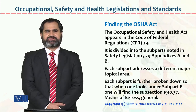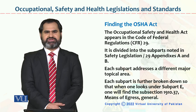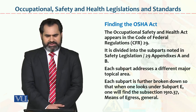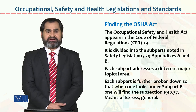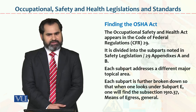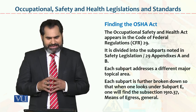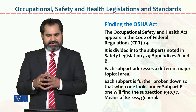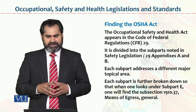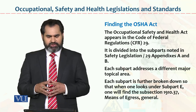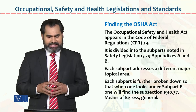Dear students, now we are discussing the findings of the Occupational Safety and Health Act. The Occupational Safety and Health Act appears in the Code of Federal Regulations, 29. It is divided into subparts noted in safety legislation, 29 appendixes A and B.